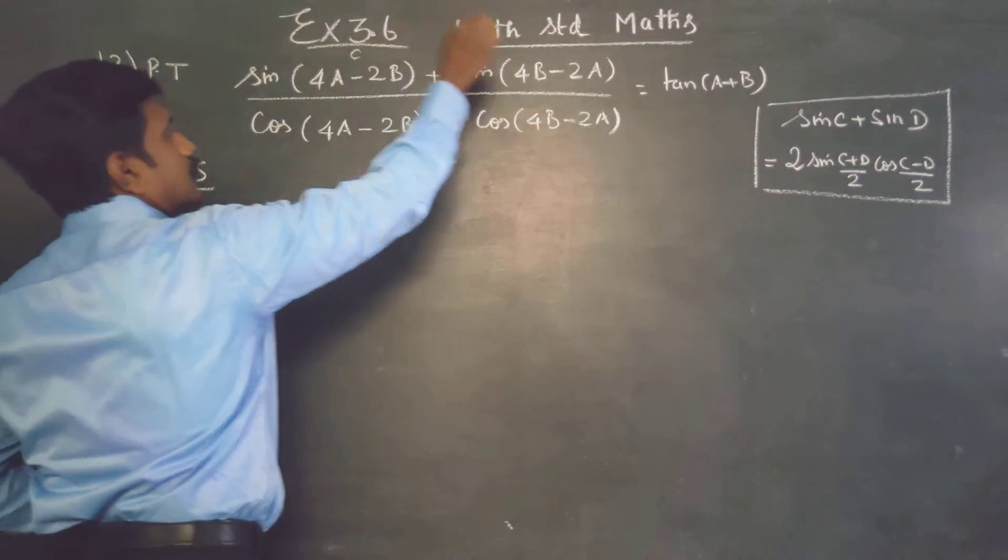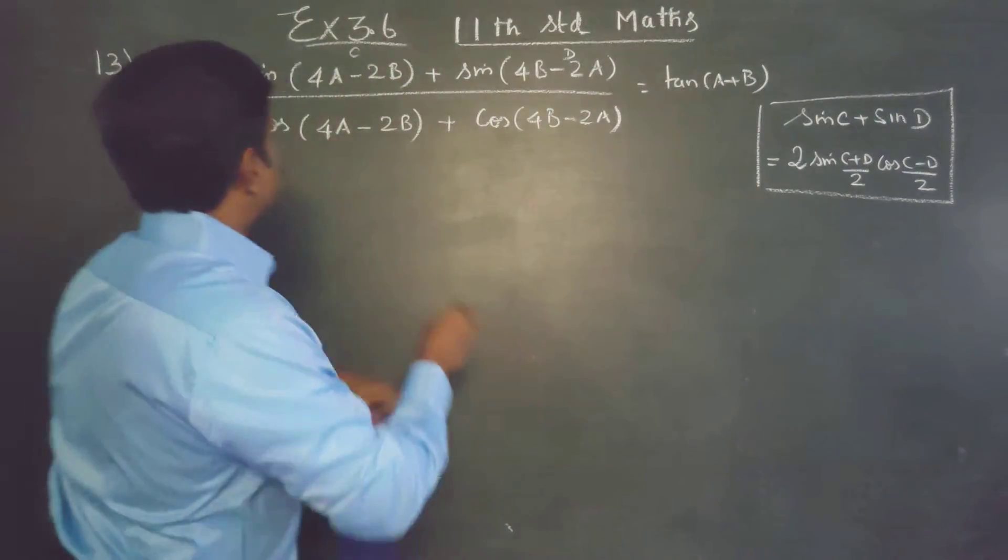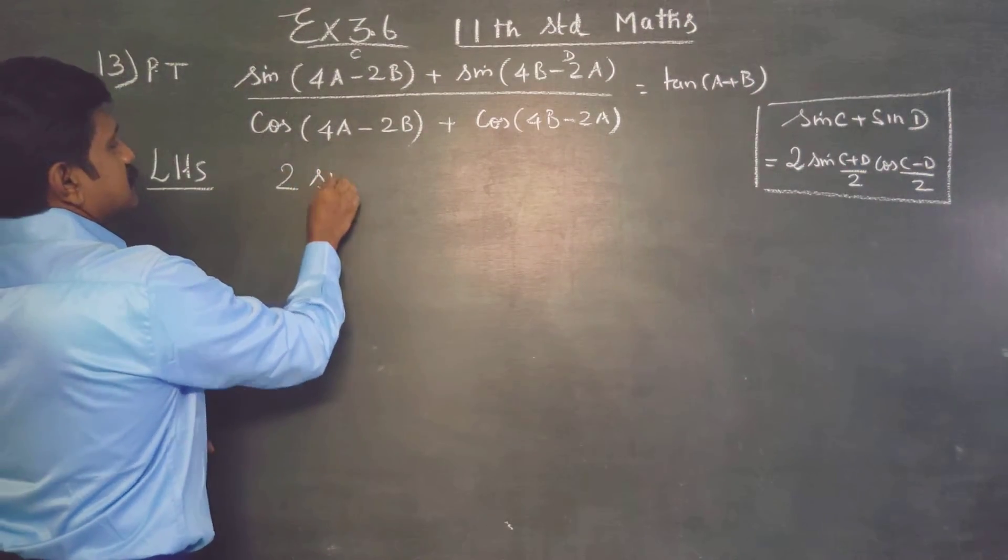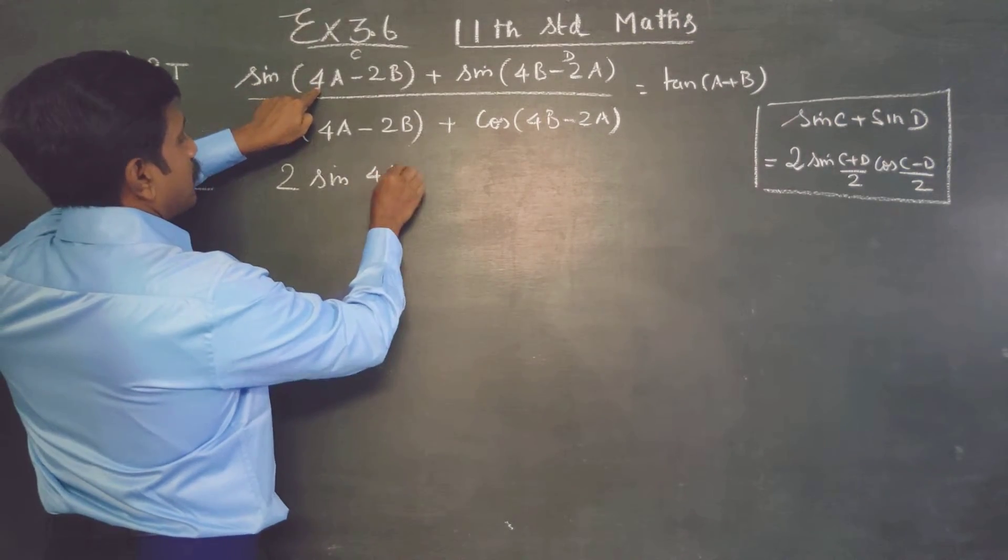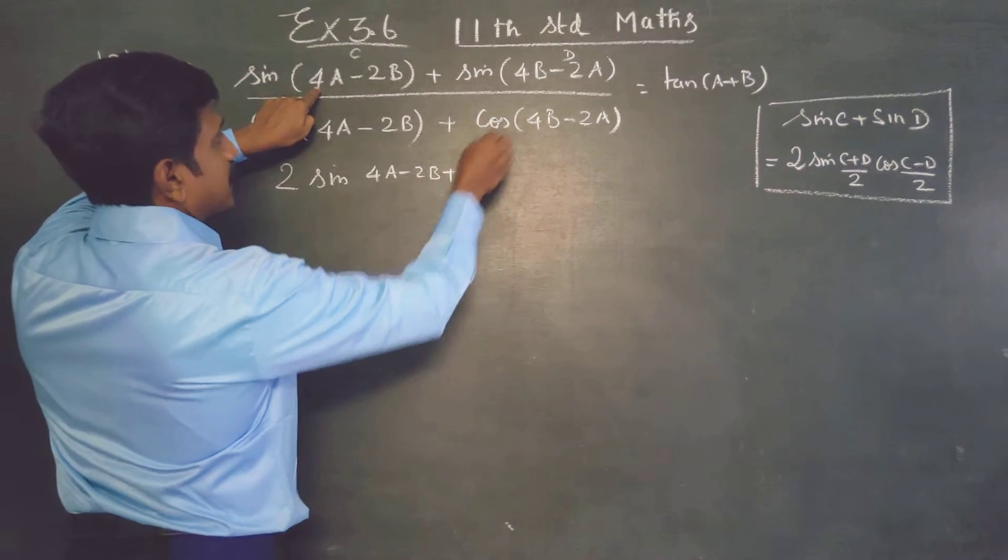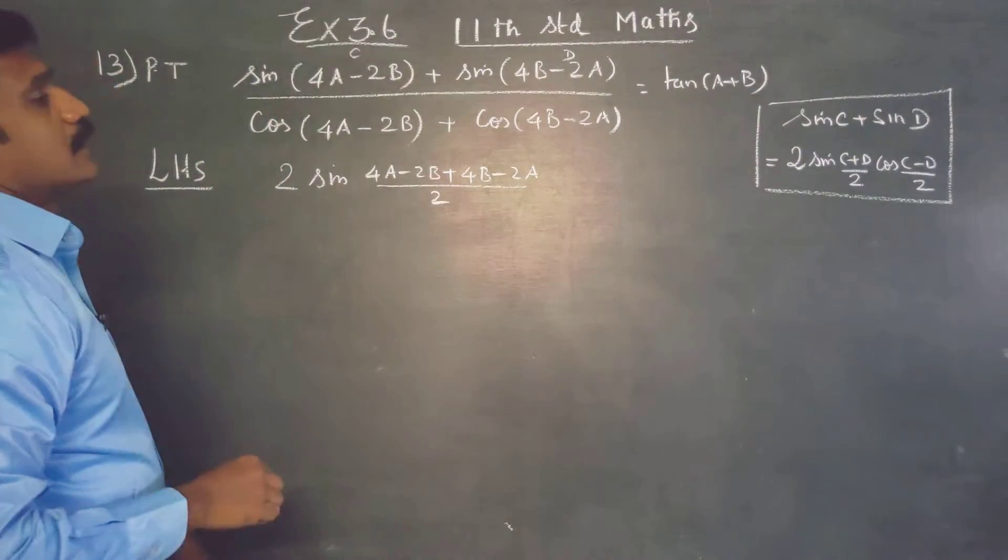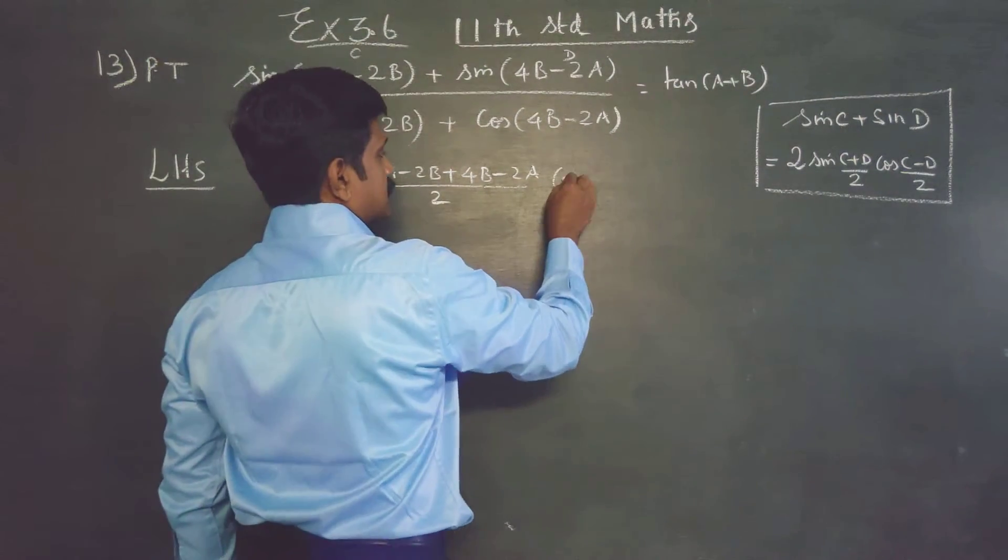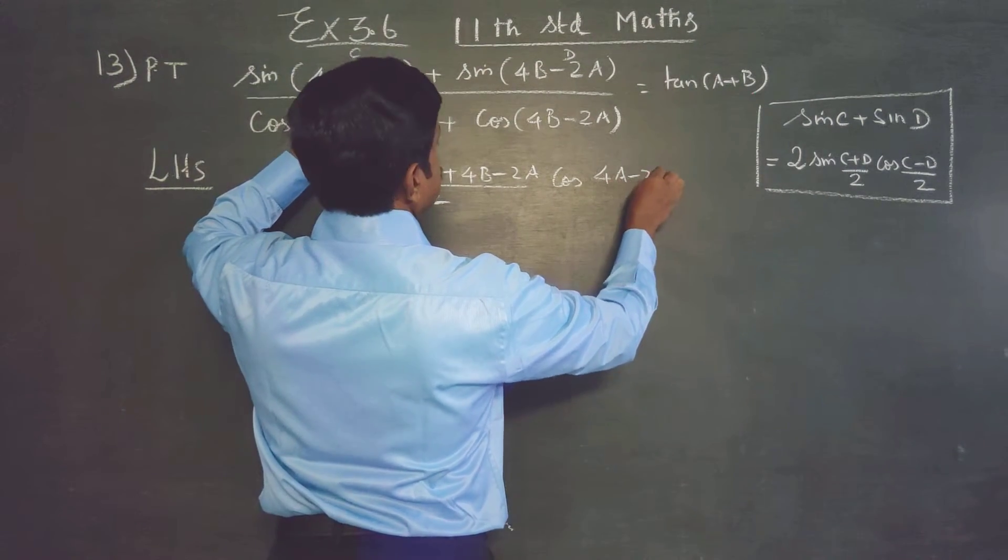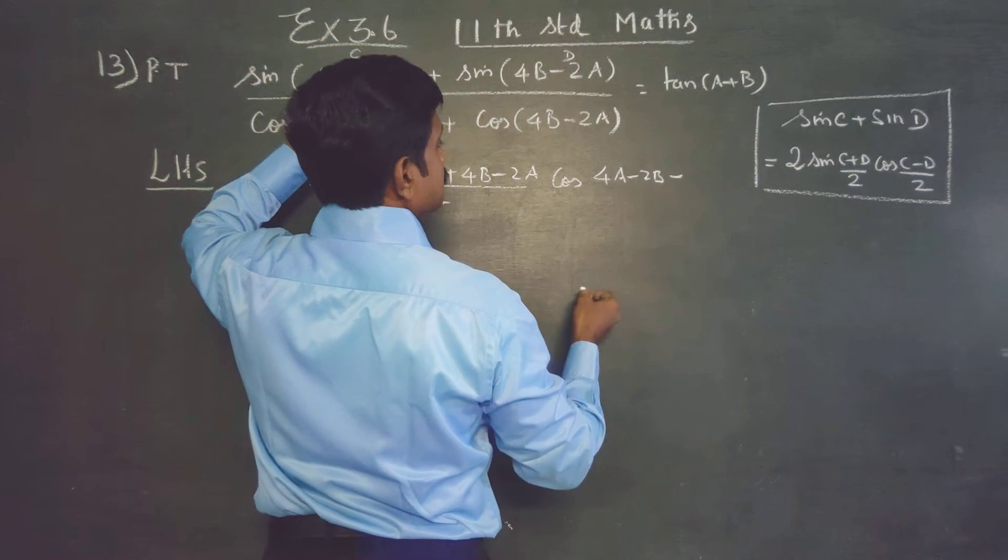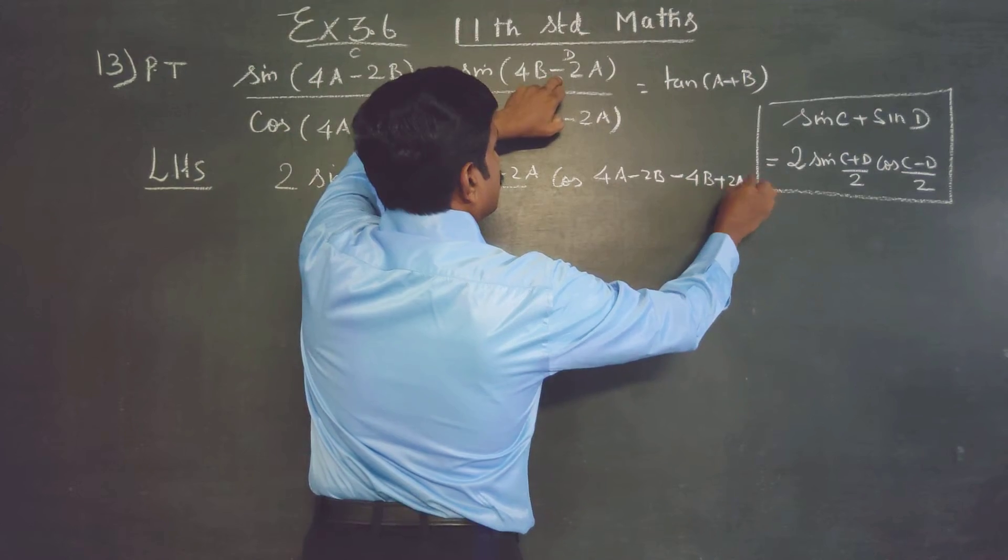It is c and d. Now sinc plus sind, start with my LHS. 2 times sinc plus d by 2. C is 4a minus 2b plus 4b minus 2a by 2. Then cosc minus d by 2, this minus of this: 4a minus 2b minus minus 4b, it is minus of 4b, plus 2a by 2.